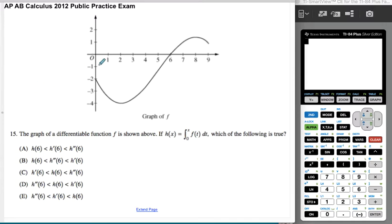The graph of a differentiable function f is shown. We know that h(x) is the integral from 0 to x of f(t)dt. Which of the following is true?